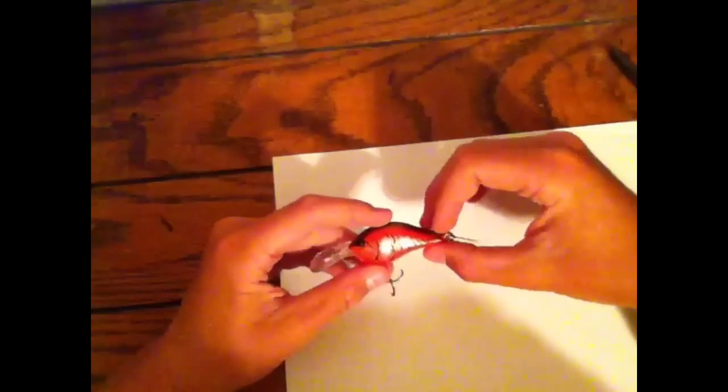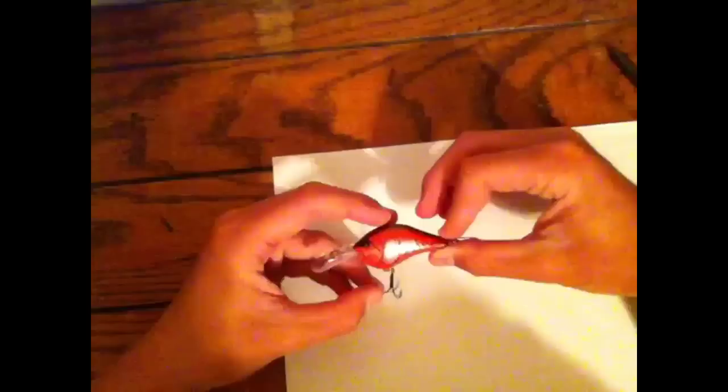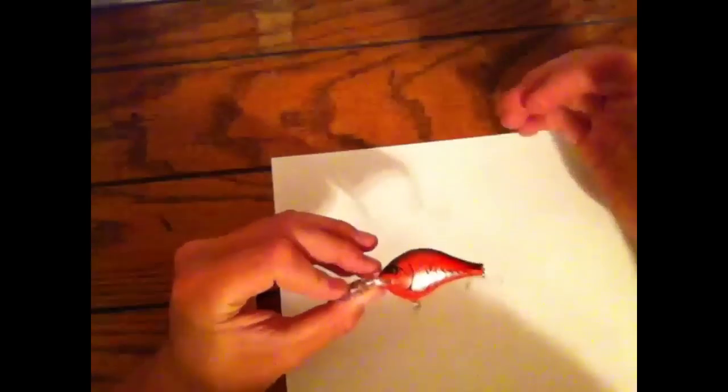Now, specifics about the Rapala DT-6. DT-6, all DT stands for simply is Dives-To. DT-6, Dives-To-6. Now, I told you about this color.